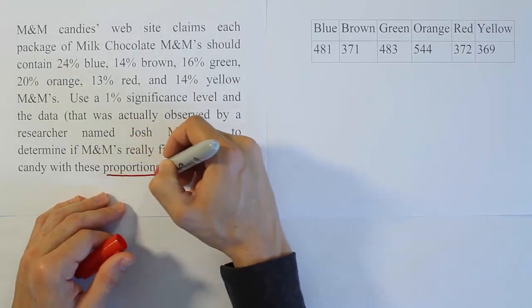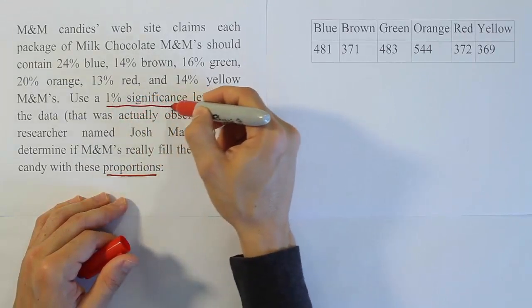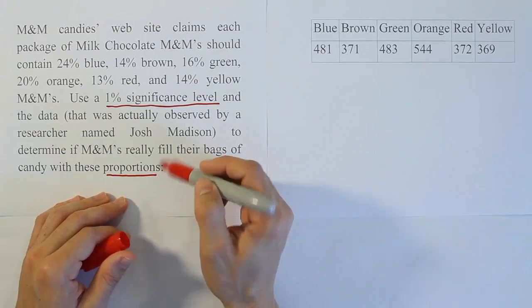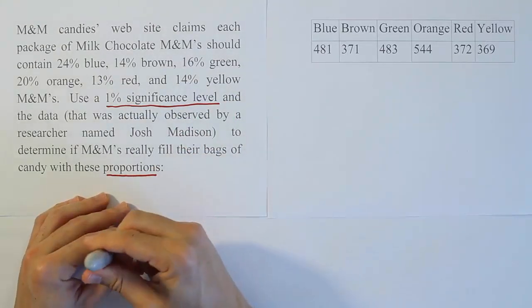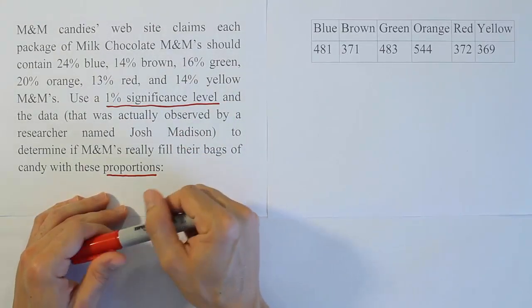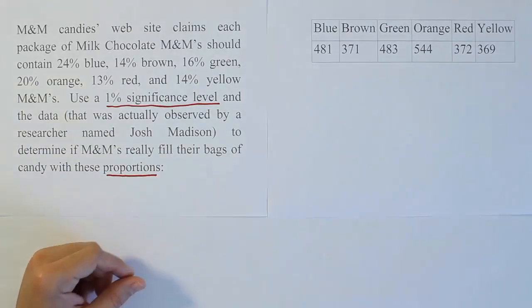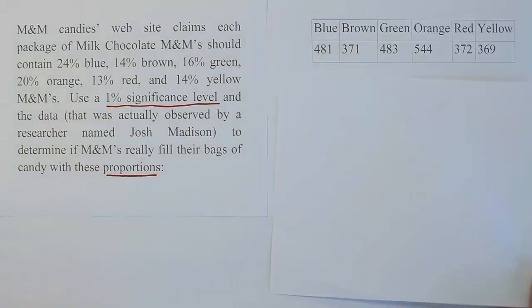This mention of proportions and the 1% significance level tells me we're doing a hypothesis test about proportions. Since there's more than one proportion, we're using the one-way chi-squared procedure. Let's start with the claim.